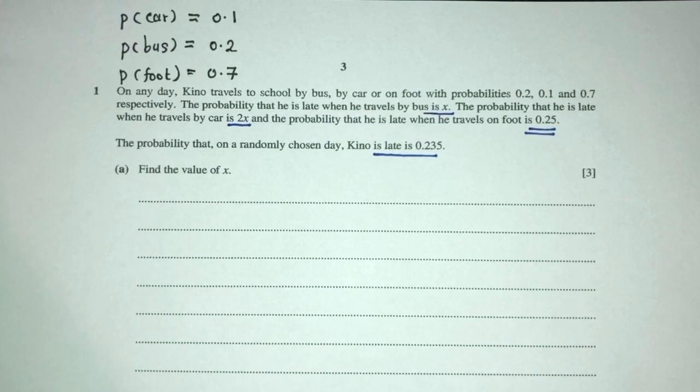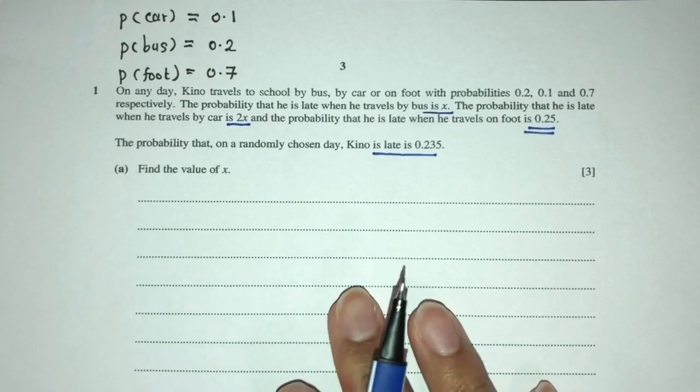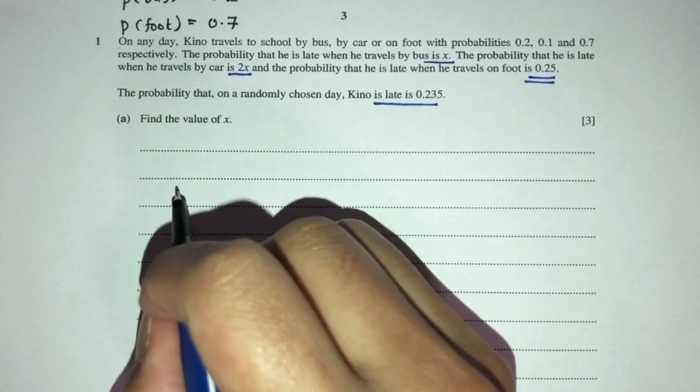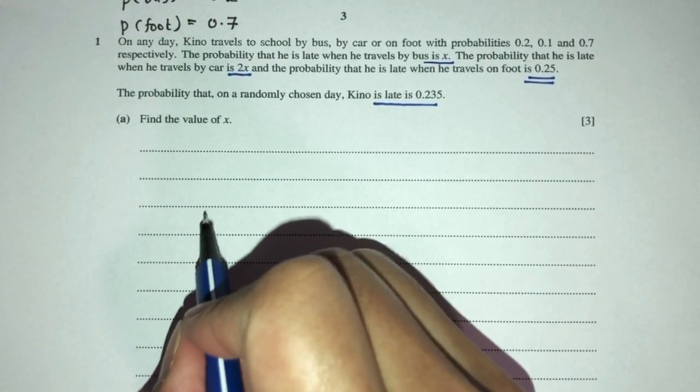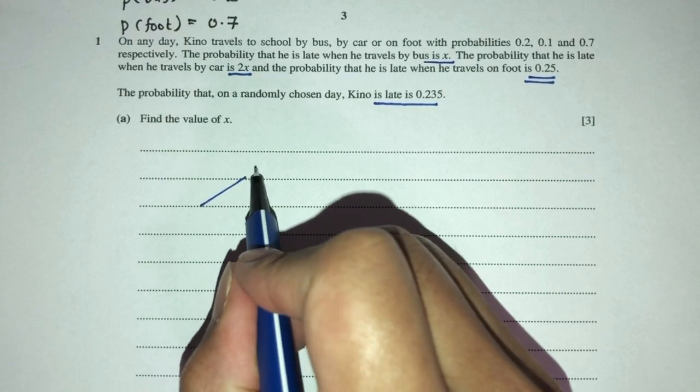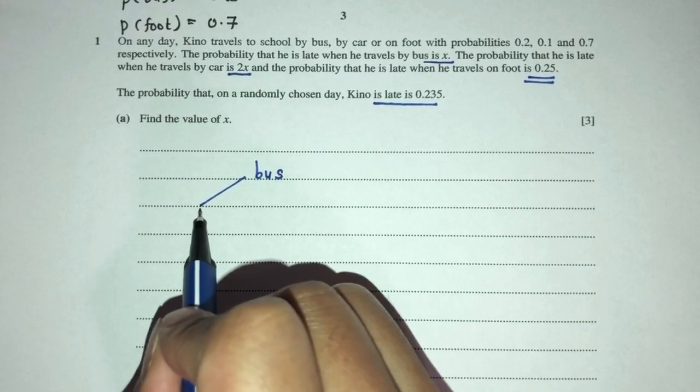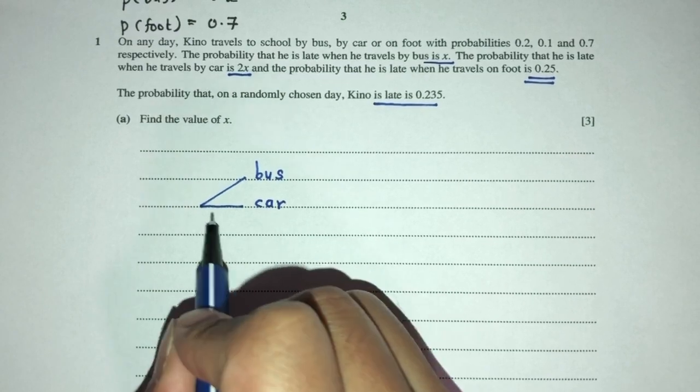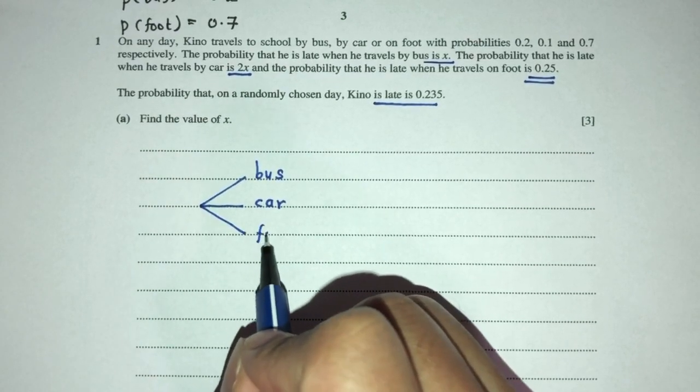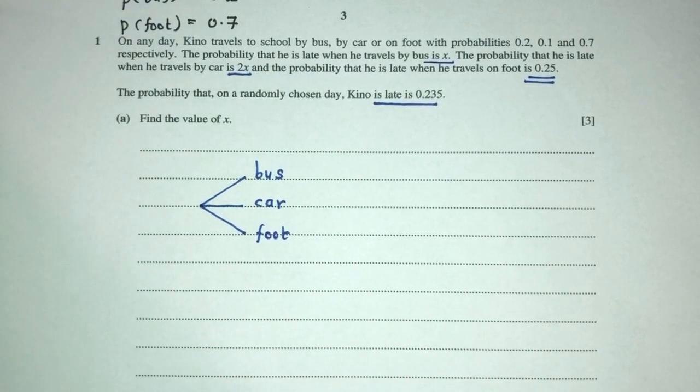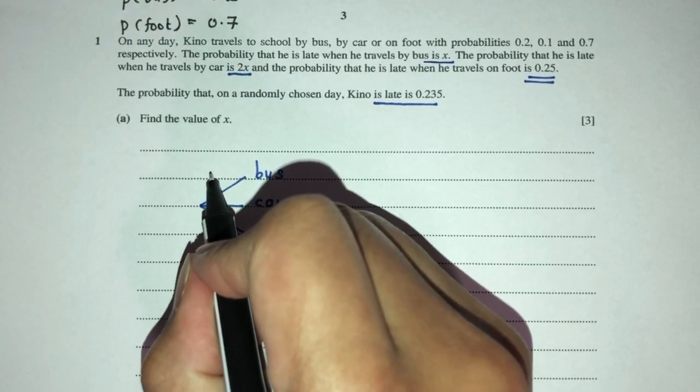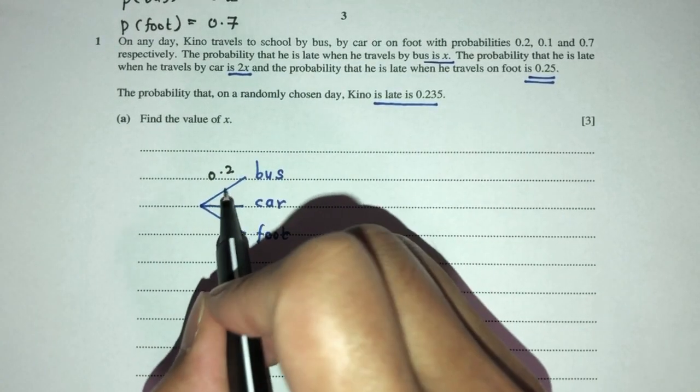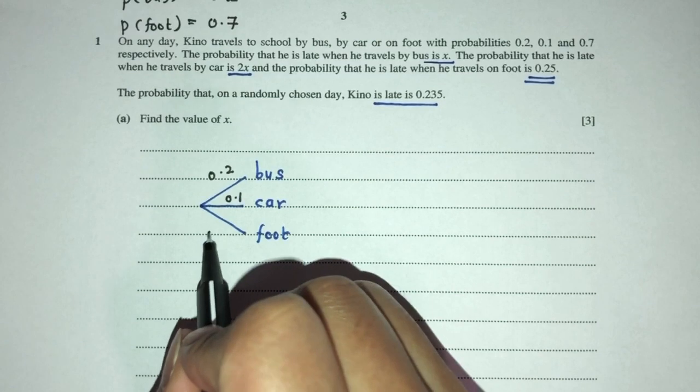Well, we can try to use a tree diagram to help us understand what's happening, right? Because there's a lot of things happening at the same time. It could be confusing. So why not just use one tree diagram? So he can go to school by bus, by car, or on foot. And we know this already. This is 0.2, 0.1, and 0.7.